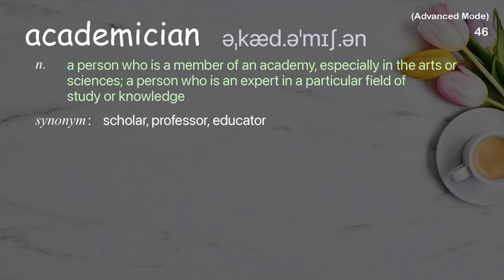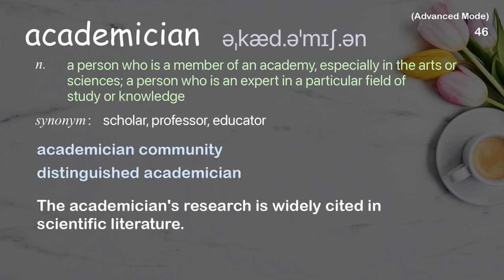Academician: a person who is a member of an academy, especially in the arts or sciences; a person who is an expert in a particular field of study or knowledge. Examples: academician community, distinguished academician. The academician's research is widely cited in scientific literature.